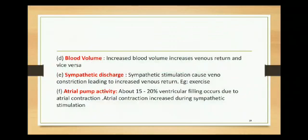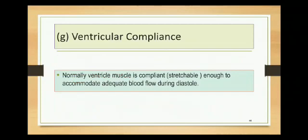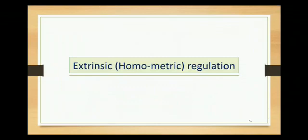Increased blood volume increases venous return and vice versa - more venous return leads to more end-diastolic volume, more preload, more stroke volume, and more cardiac output. Sympathetic discharge causes venoconstriction, leading to increased venous return, as seen during exercise. Atrial pump activity contributes 15 to 20 percent of ventricular filling through atrial contraction, which increases during sympathetic stimulation. Ventricular compliance - the ventricle muscle must be compliant and stretchable to accommodate blood during diastole; in certain diseases where compliance is reduced, blood will not fill properly.